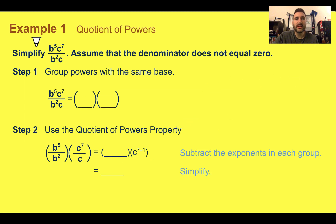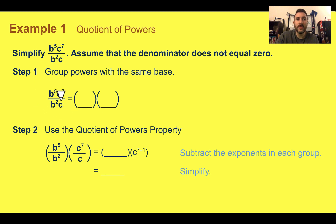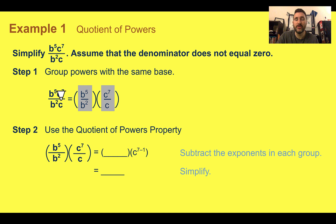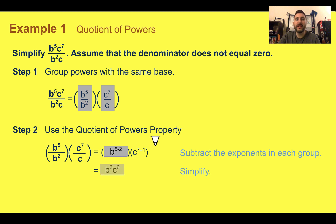Example 1, Quotient of Powers. Simplify b to the 5th times c to the 7th, divided by b to the 2nd and c. We have to assume the denominator does not equal zero. First, we're going to group powers that have the same base — putting our b's together and our c's together. Then we use the quotient of powers property by subtracting the exponents. So b to the 5th divided by b to the 2nd would be b to the 5 minus 2. And c to the 7th divided by c, with that hidden exponent of 1, would be 7 minus 1. Putting it back together, we end up with b to the 3rd and c to the 6th.